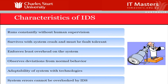When looking at IDS characteristics, you should be able to easily adopt the system with new technologies. It should be capable of working with your current environment. For example, if you have an all-Windows environment and you buy an IDS which is Linux-based but only looks at Linux behaviors — that's not good for you. You should make sure the IDS matches your specific environment requirements.